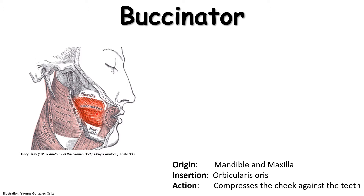The buccinator forms the lateral wall of the oral cavity — in other words, the outside wall of your mouth — and it also forms the anterior portion of your cheek, shown here, so the front side of your cheek.